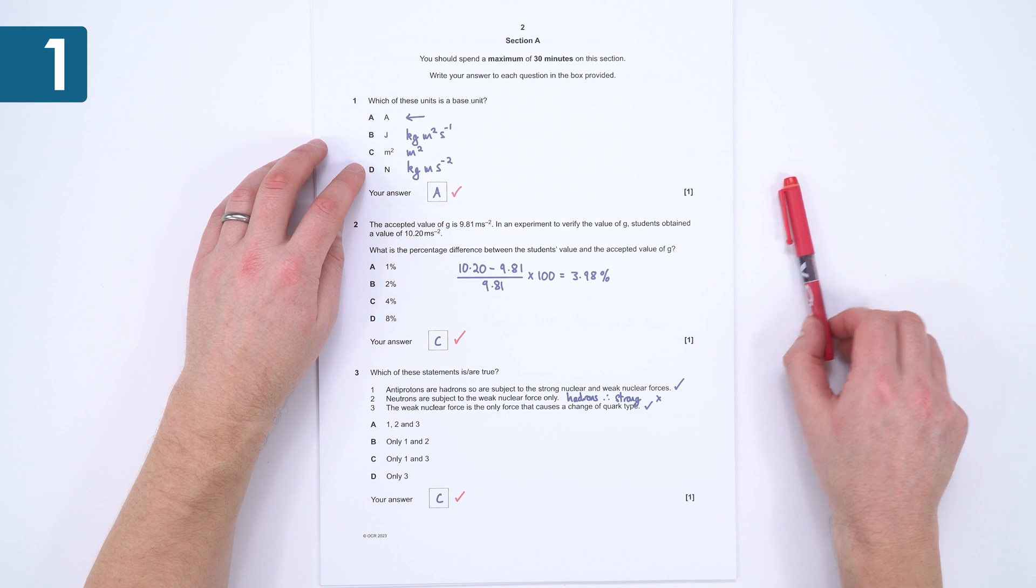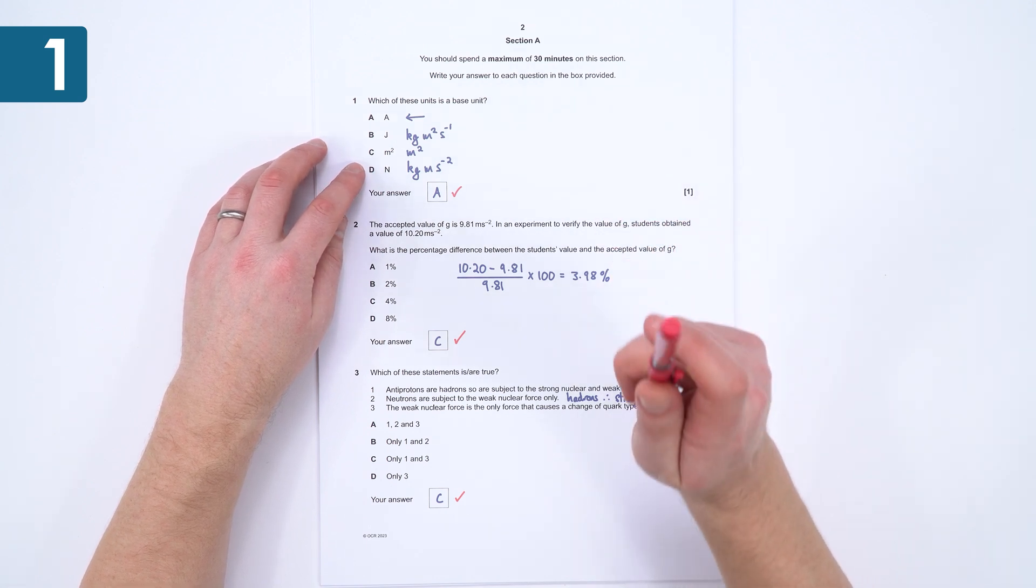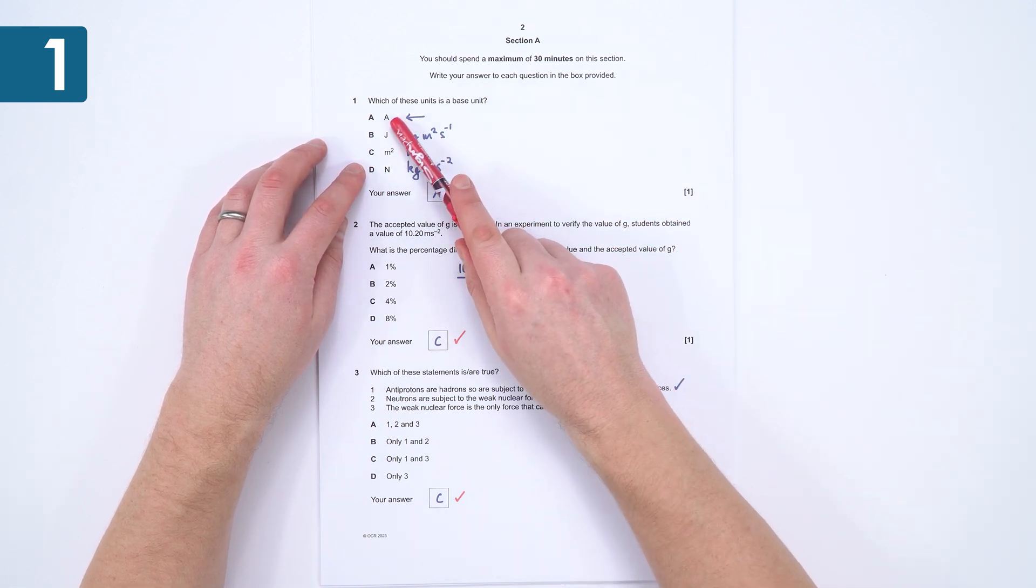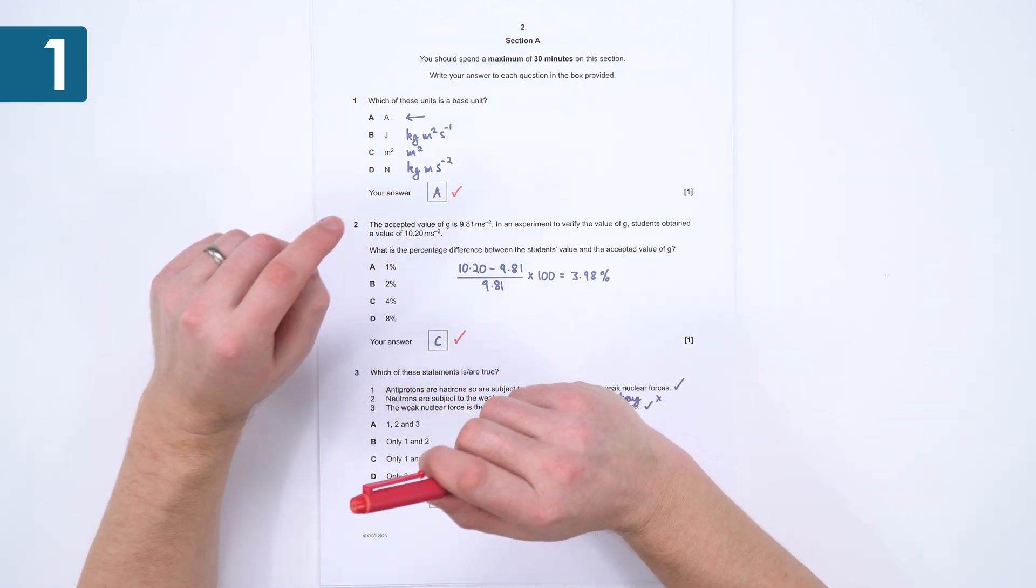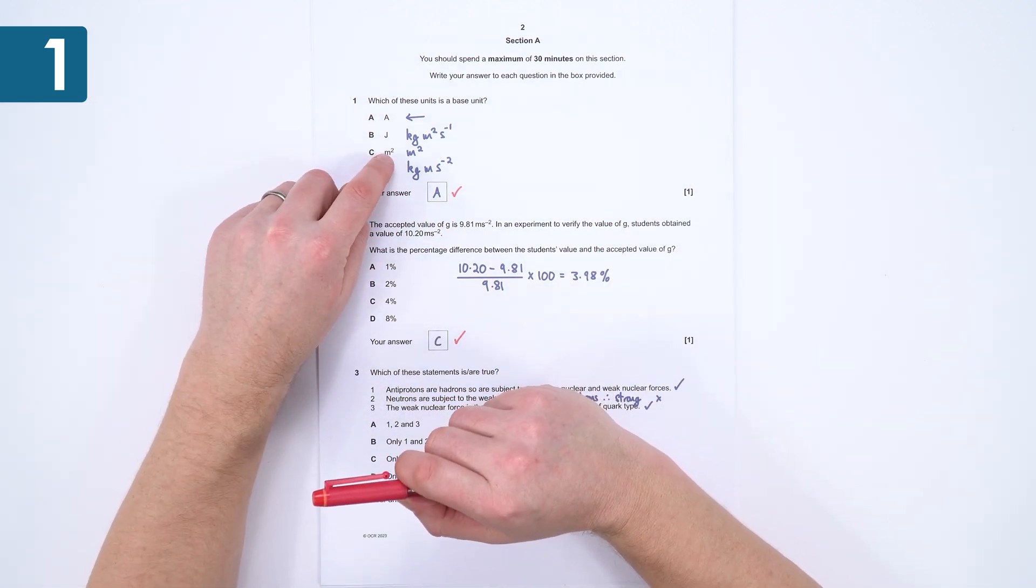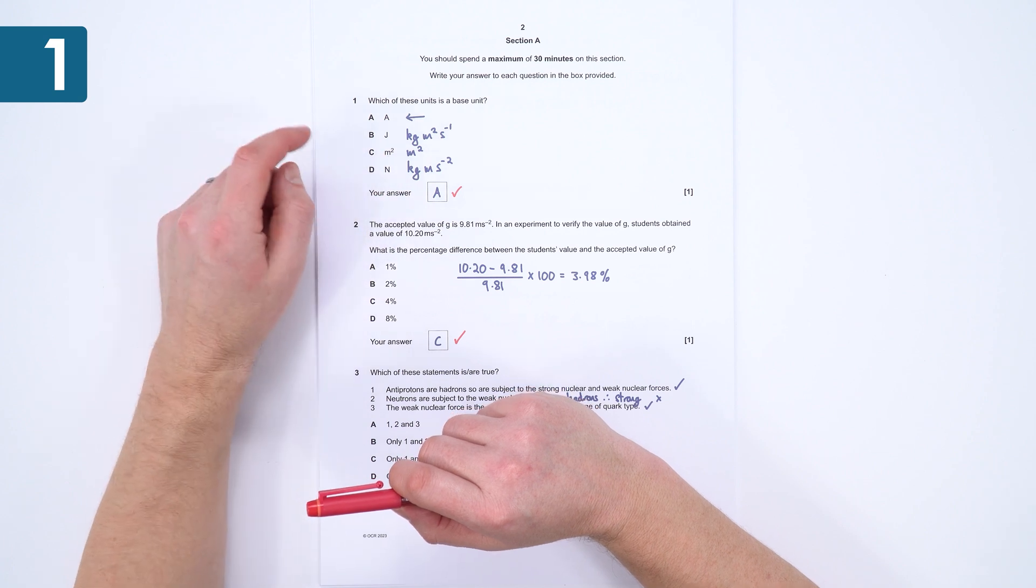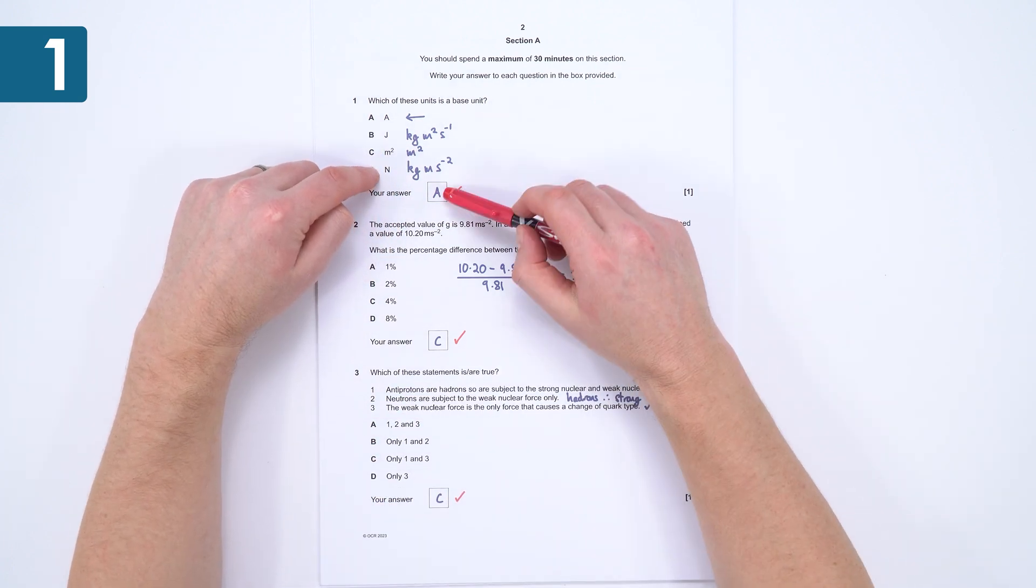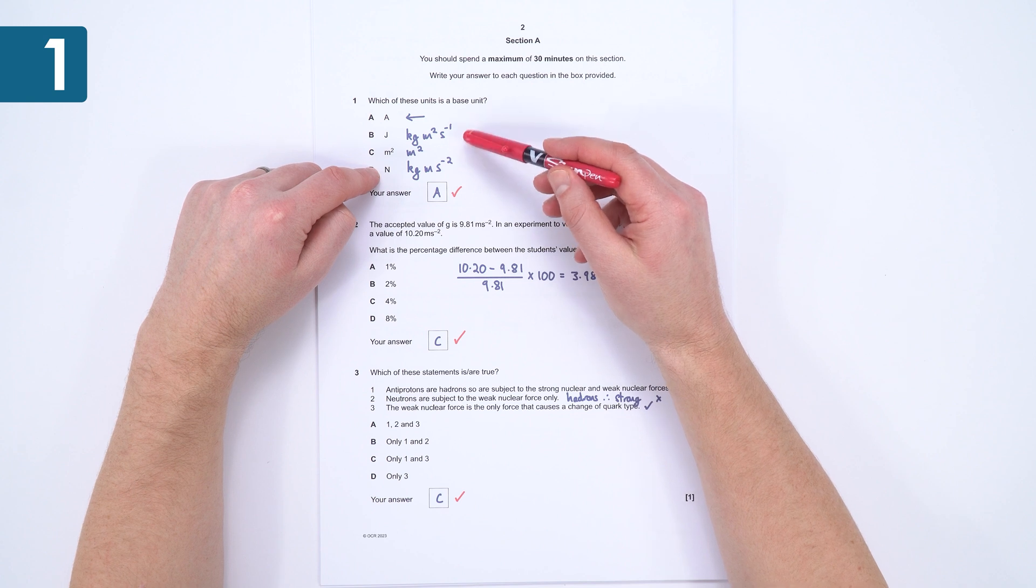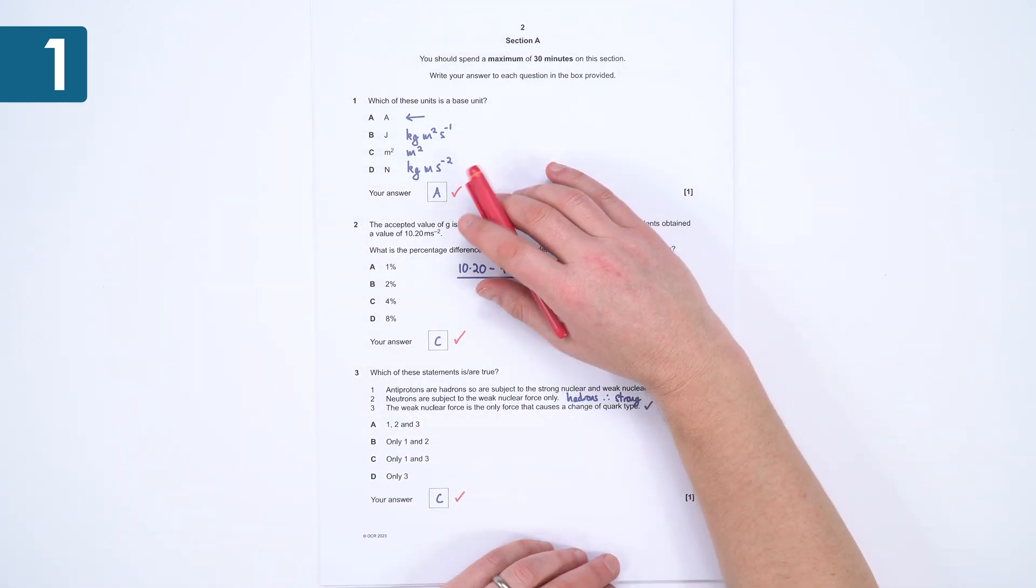So here we go with the 2023 Exploring Physics paper. Which of these is the base unit? The answer is A because we've got the amp, one of the seven base units like kilogram, meter, second and so on. Meter squared, although we've got the meter, because it's squared that's not the base unit. And of course we have these derived units for the Joule and the Newton, both of which I'm sure you'll soon start to know off by heart. So we have A to begin with.